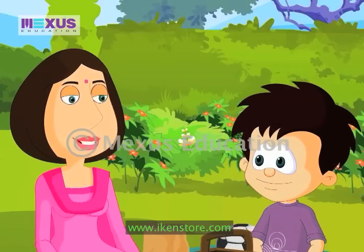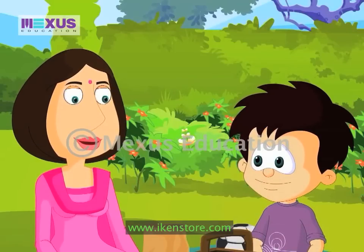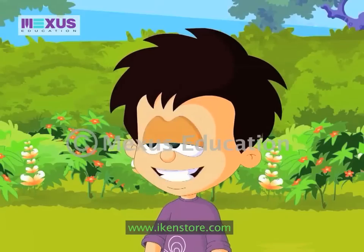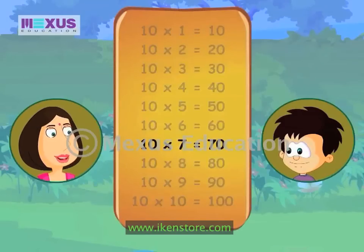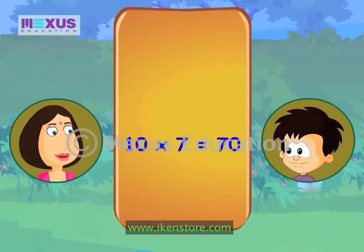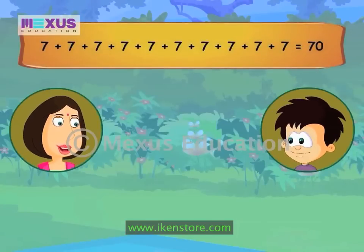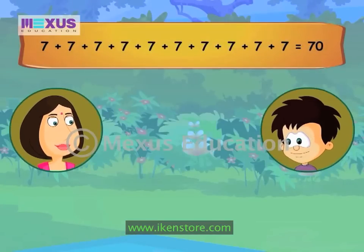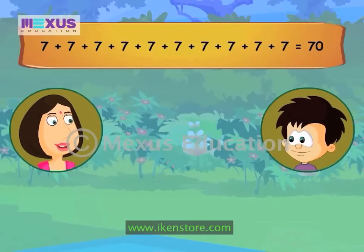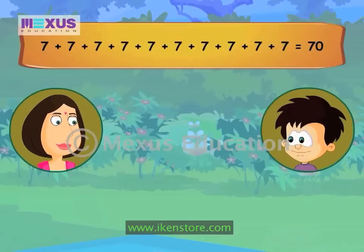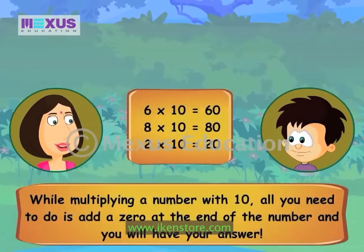That's because when a number is multiplied by 10, its value is increased 10 times. 10 x 7 gives us 70. This can also be written as 7 added 10 times, which is 70. This means that when the value of 7 is increased 10 times, we get 70. The same goes for any number being multiplied by 10.